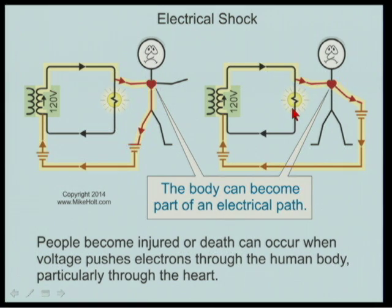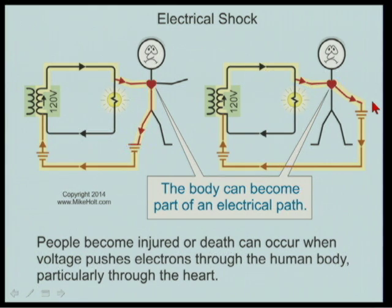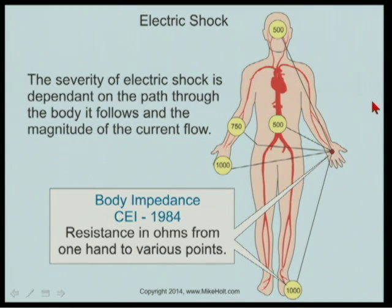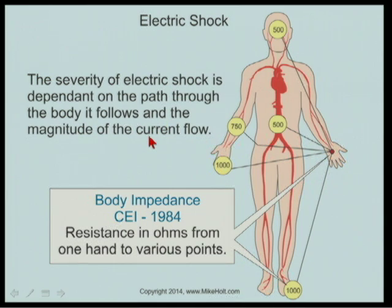From hand to hand, this is 120 volts across the light, and across this person we'd measure 120 volts. The severity of electric shock - how severe it is - depends on the path through the body it flows and the magnitude of the current.